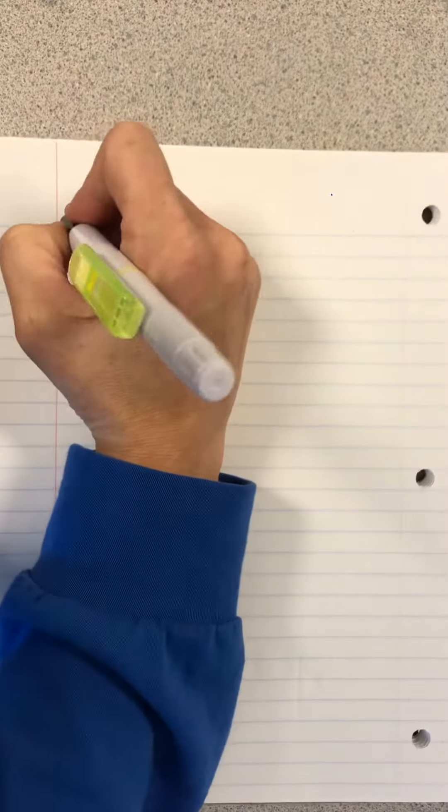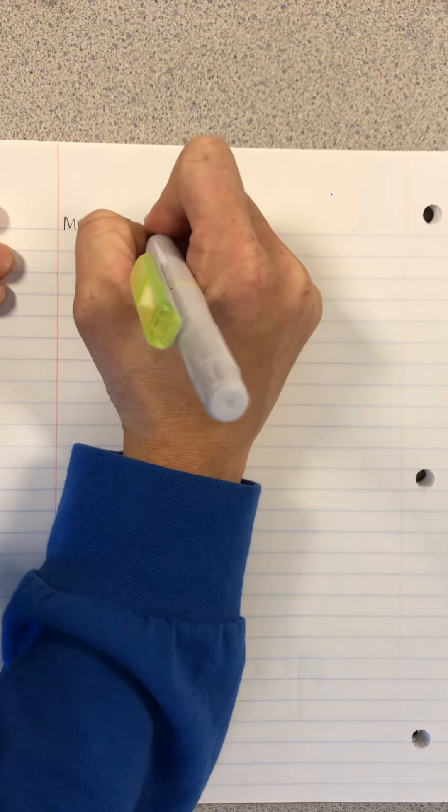Normally when we write on our paper, we just write from left to right. We might write our name, we might write the date,